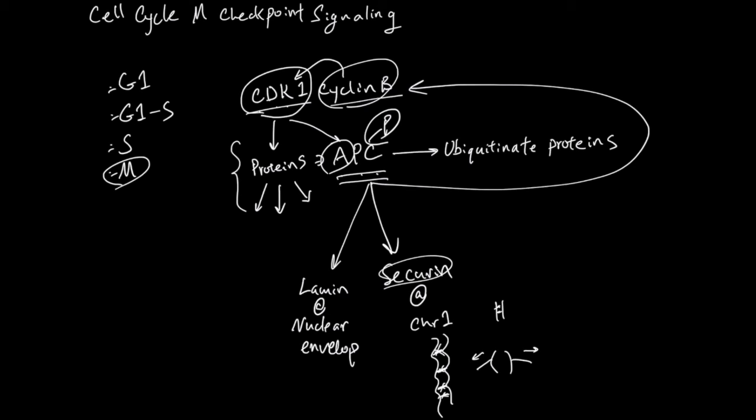And APC, one of the targets of CDK1, is going to remove the cyclin B so that this negative feedback contains this checkpoint process.